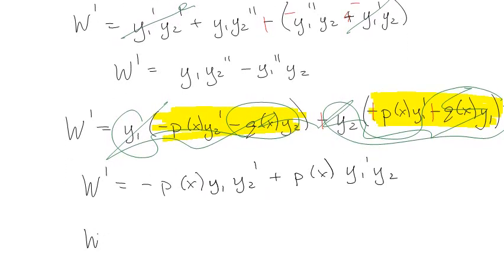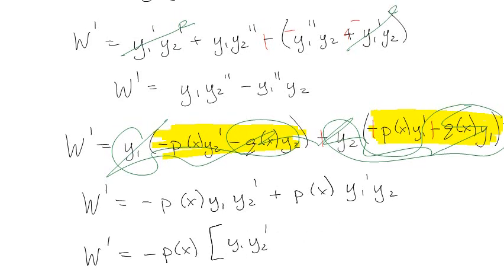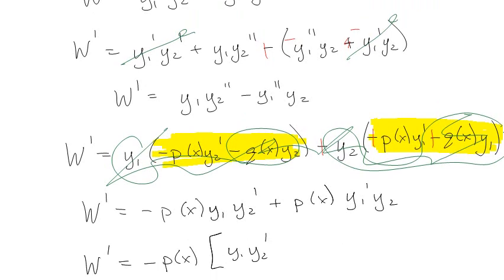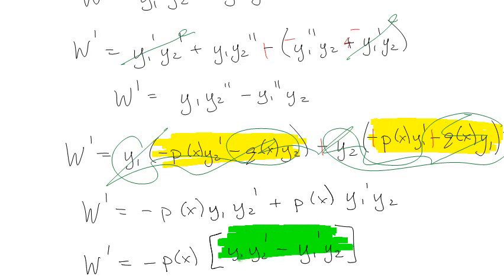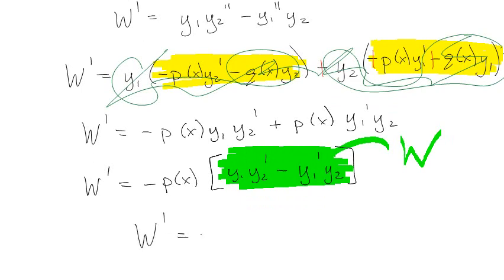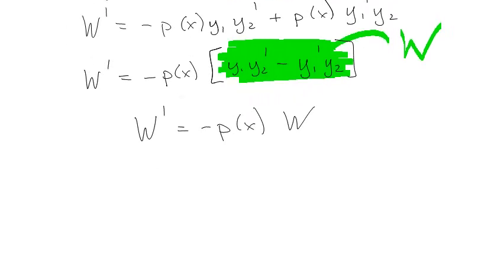Factor out negative P(x), and we end up with Y1·Y2' minus Y1'·Y2 — which is exactly the Wronskian! So basically what we end up with is W' = -P(x)·W, which is fantastic because it means we can solve for the Wronskian directly.